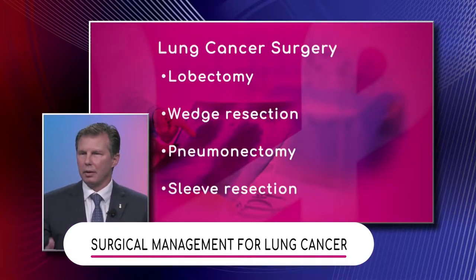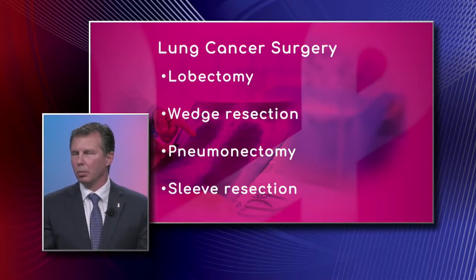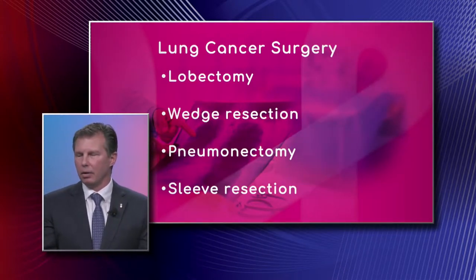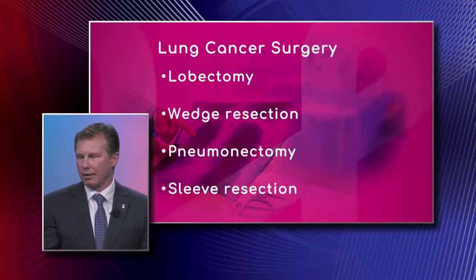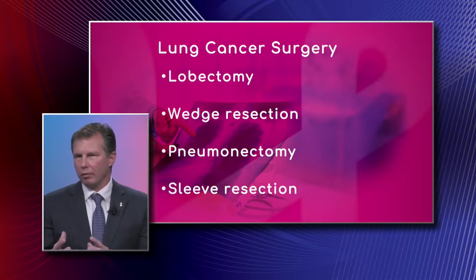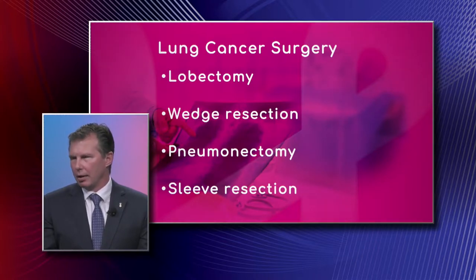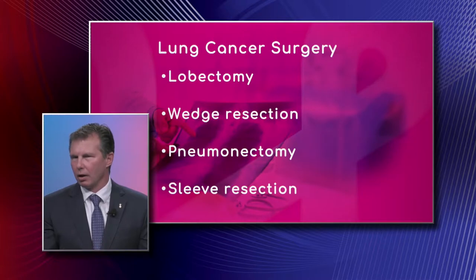These listed surgeries are techniques to remove tumors of the lung. A lobectomy is removing an entire anatomical structure called a lobe — on the right side you have three lobes, on the left side you have two lobes — and that's the most common operation we perform. A wedge resection is usually for diagnosis, wedging out a little nodule. A pneumonectomy is removing the entire lung, and a sleeve resection is a lung-sparing operation by reconstructing the airway to save some of the lung.